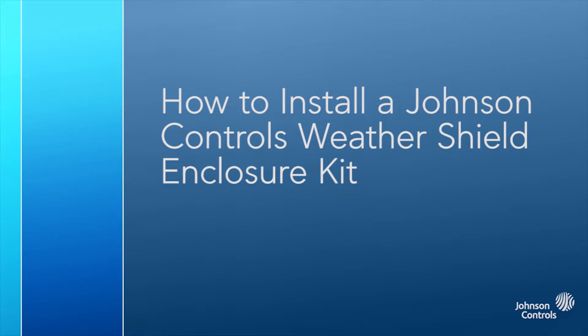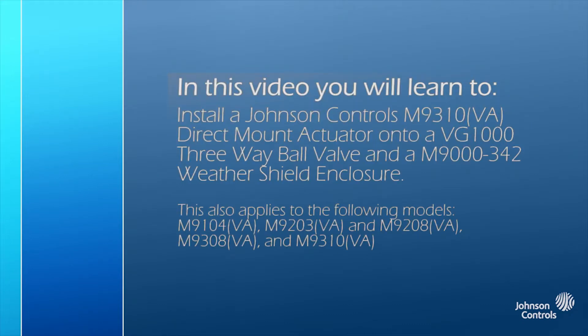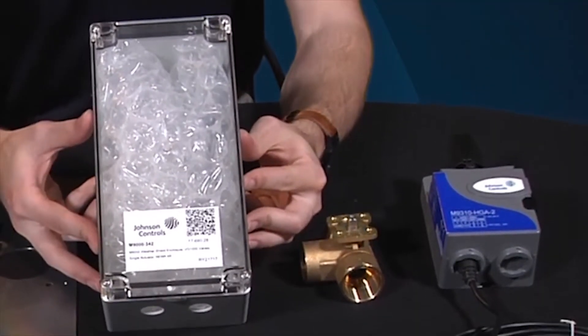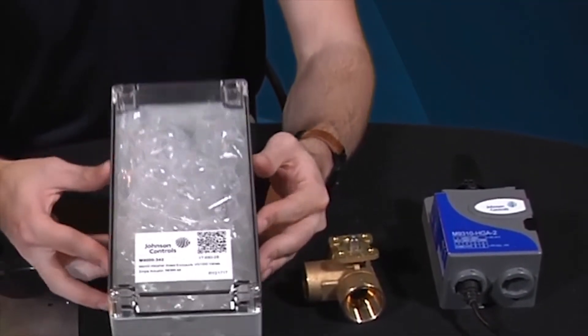This video will be demonstrating the installation of a Johnson Controls 9310 direct mount actuator onto a VG1000 three-way ball valve and an M9000-342 weather shield enclosure kit.